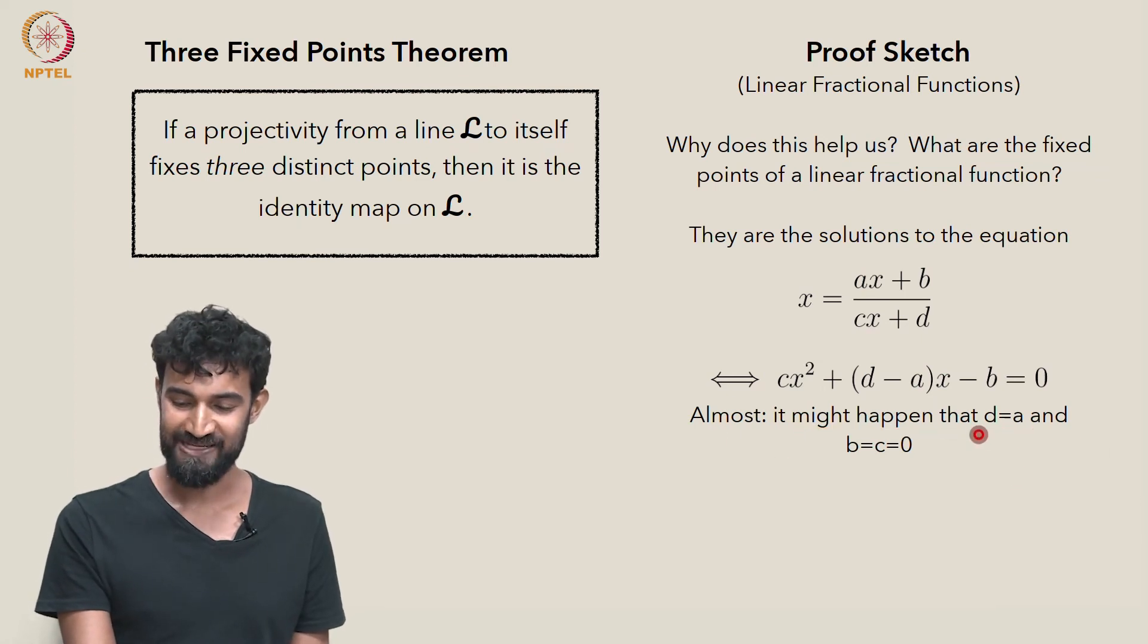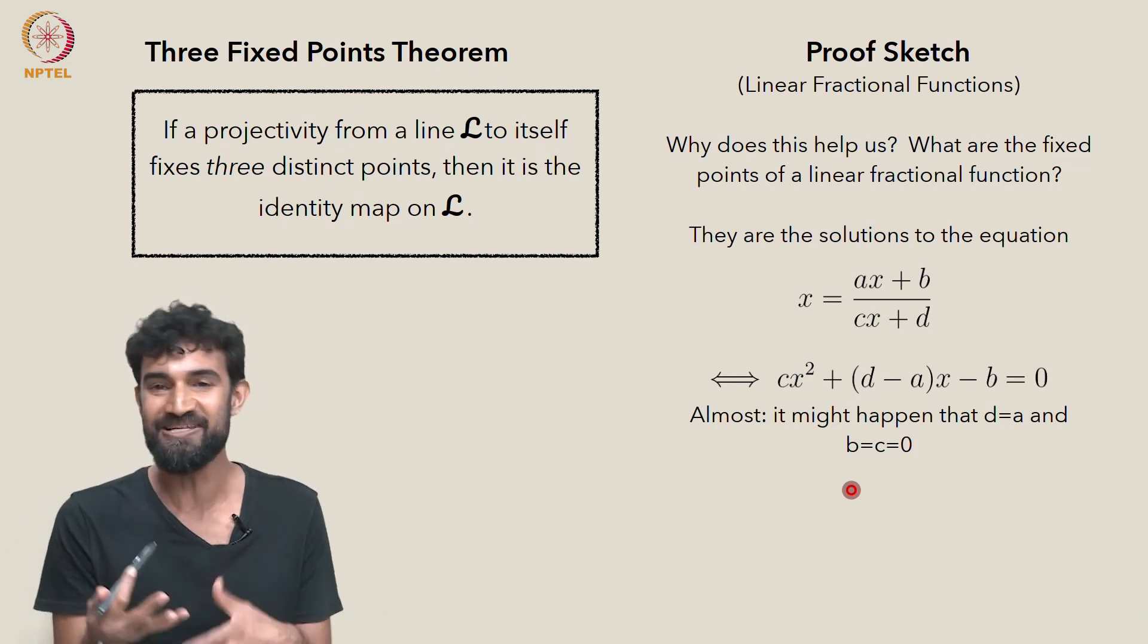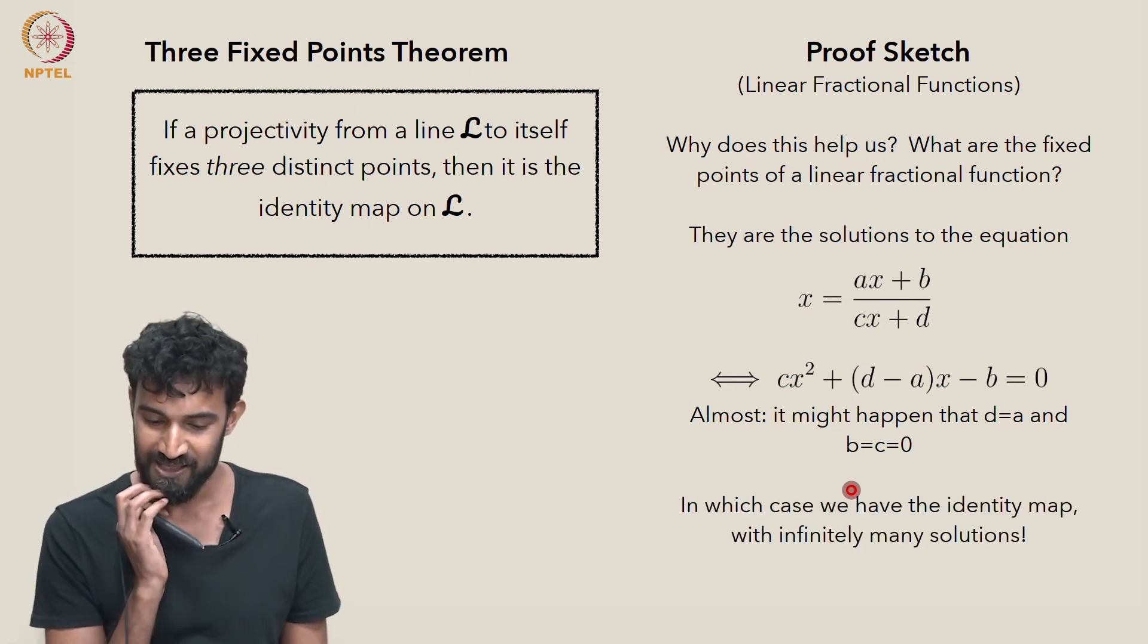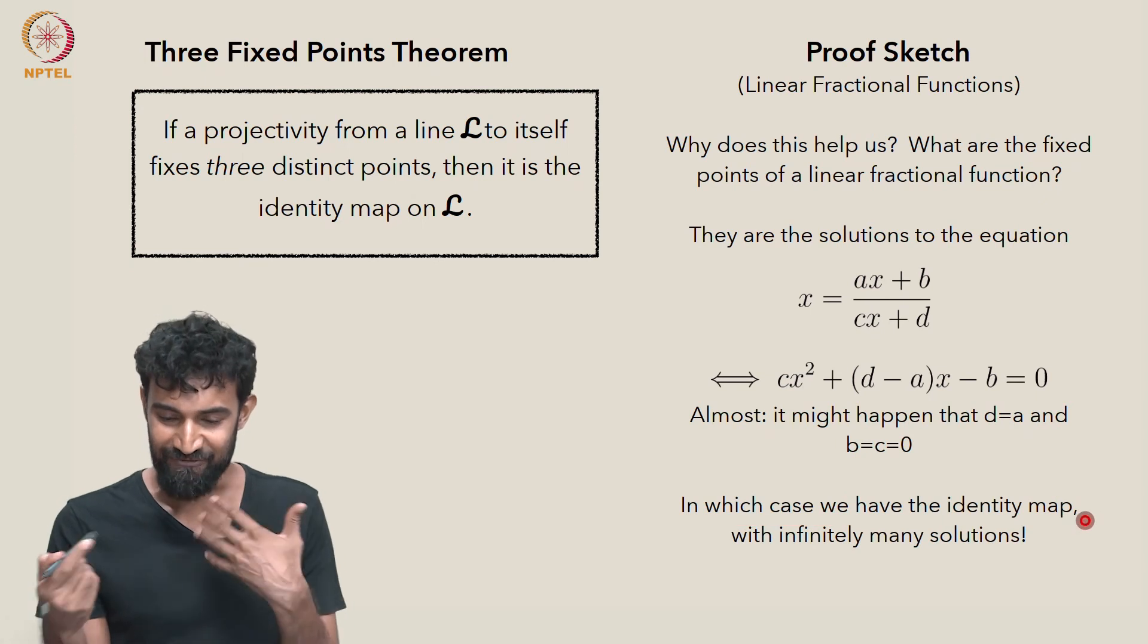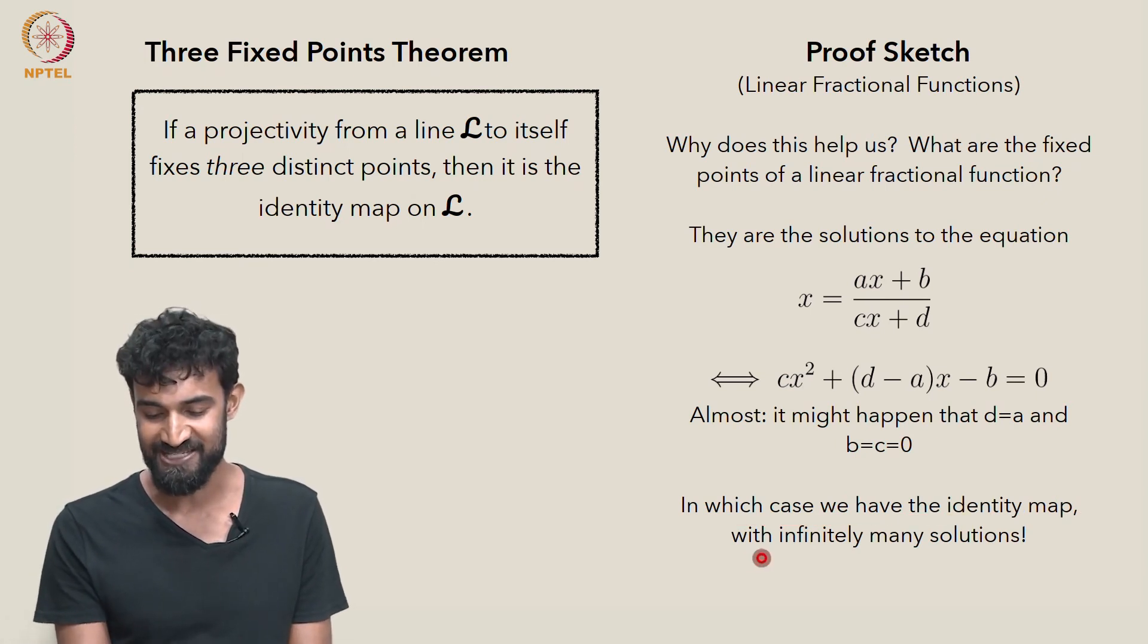Well almost. It might happen that d equals a, so this disappears, and b and c are both 0. Then we get 0 equals 0, and there's infinitely many solutions. But in that case, everything is a solution. Everything is a fixed point. And that simply is the identity map with infinitely many fixed points.